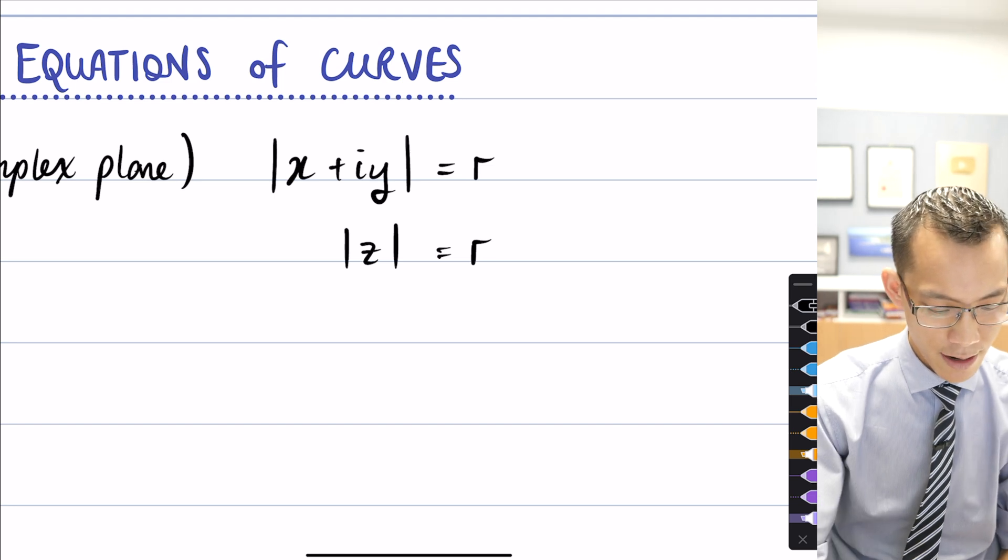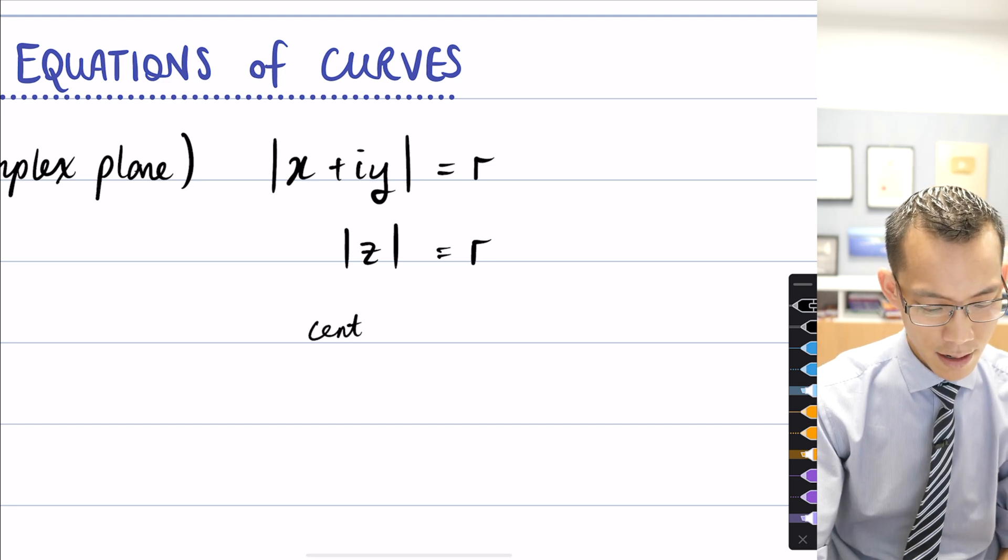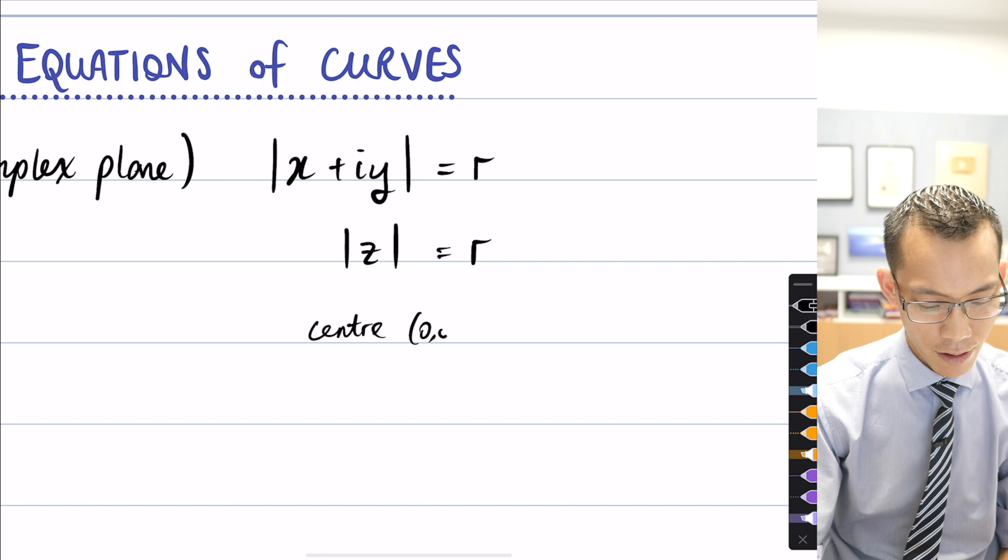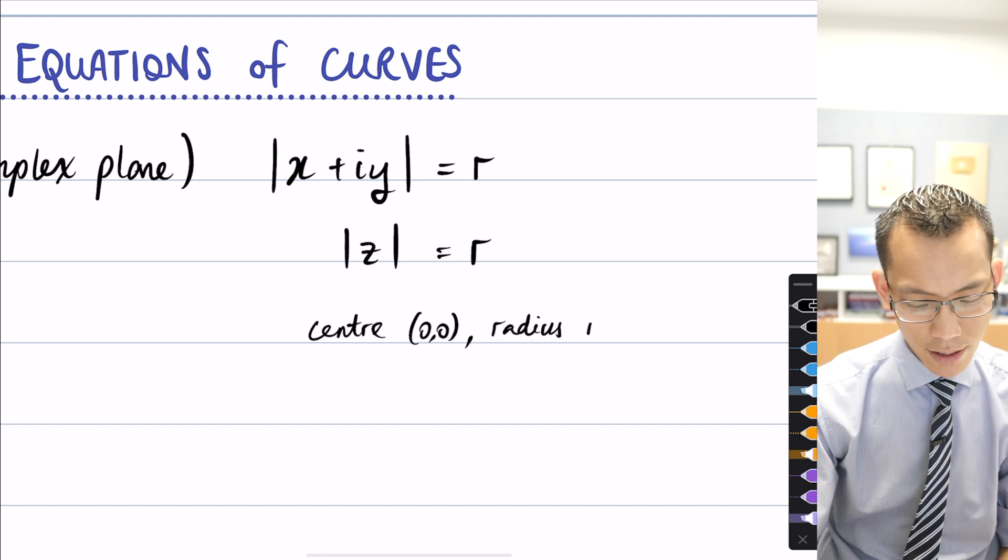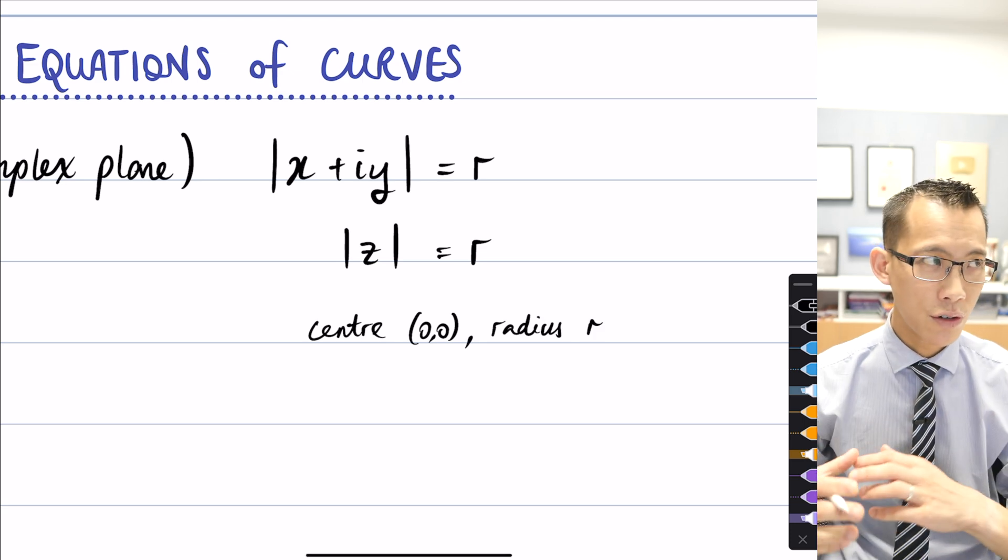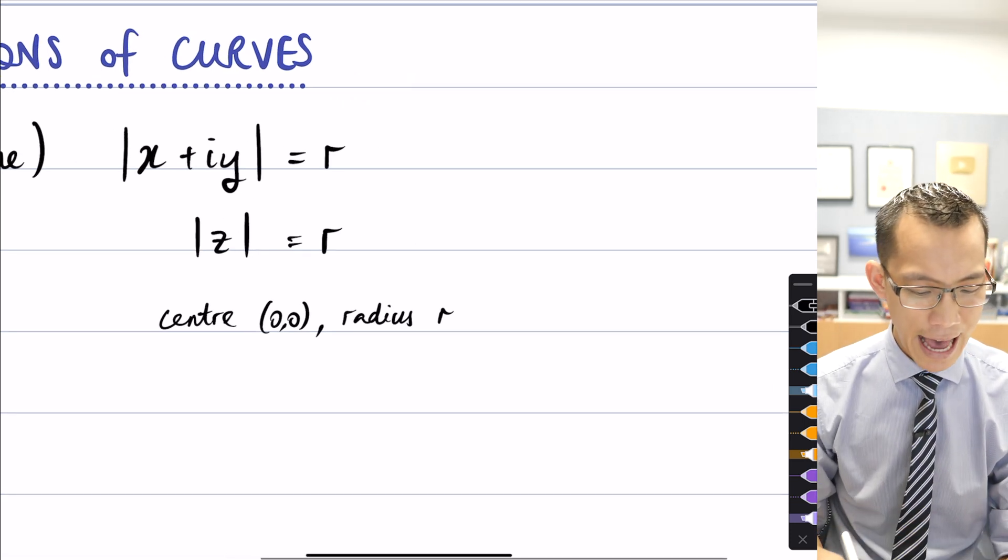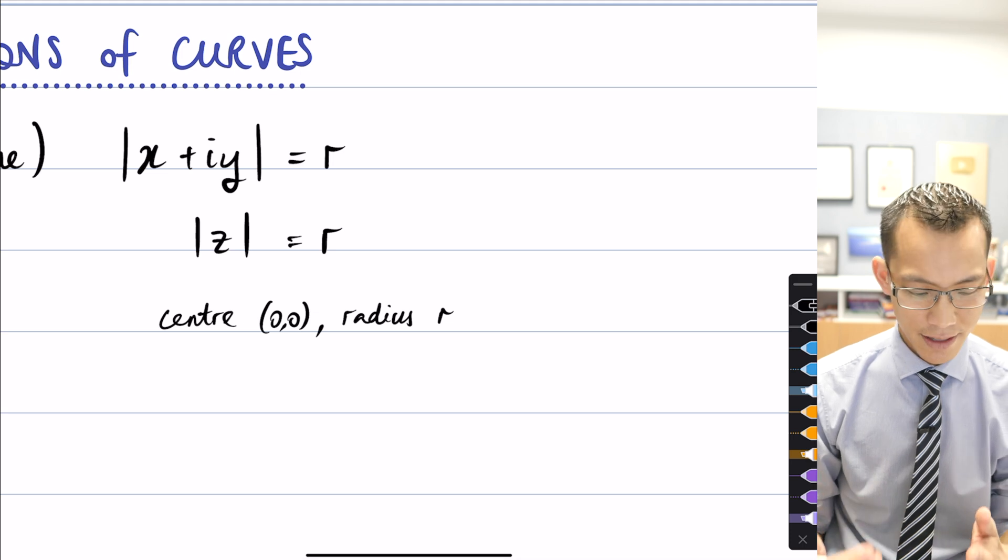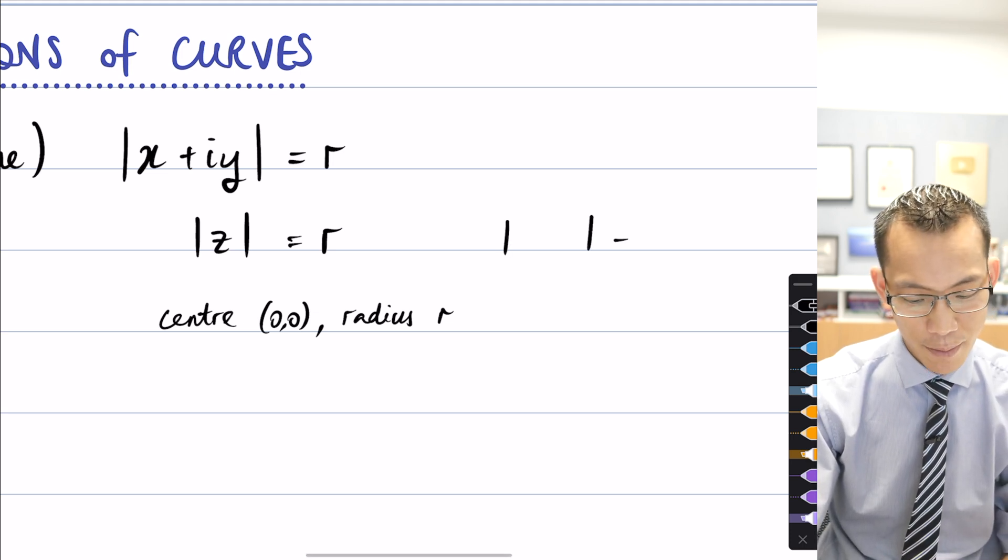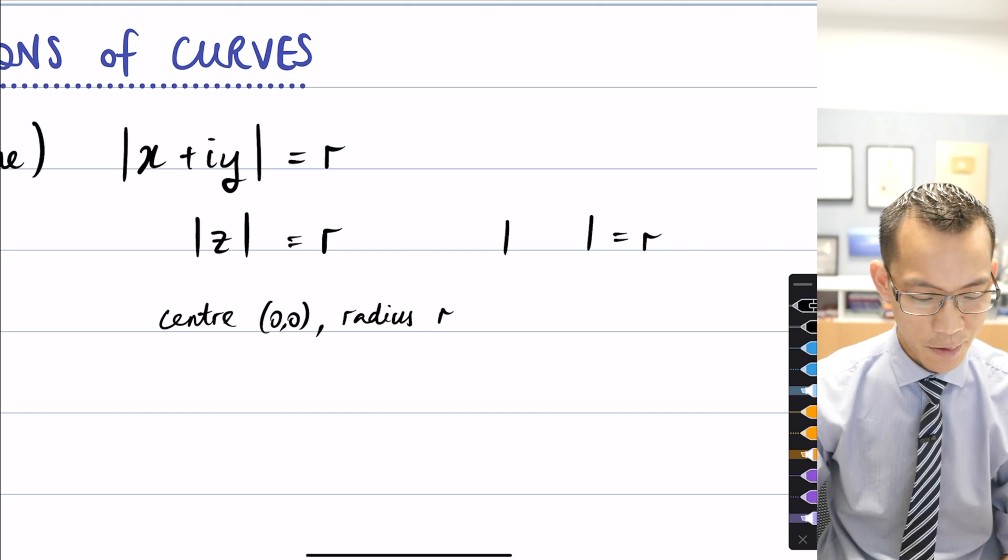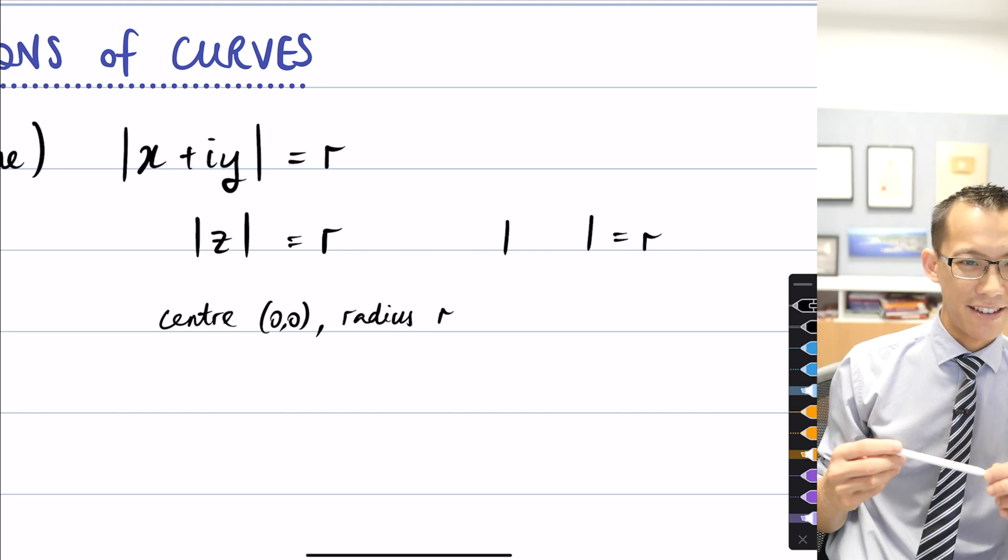So being that this is a circle with center on the origin, maybe I might mention that: center 0,0, radius r. How would we adjust this so that we could have a circle that has a different kind of center? How would we write it in complex numbers? I'll give you a clue, it starts very simply like we had before. There's a modulus and then there's a radius but we need to change something. What do we need to change?